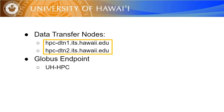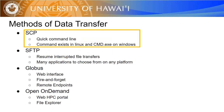There are a few different methods that you can use to transfer data to and from the DTNs. The first method is using the secure copy, or SCP, command. This command is found in both Linux and Windows command line environments. For users used to the command line, this is a quick tool to transfer files.